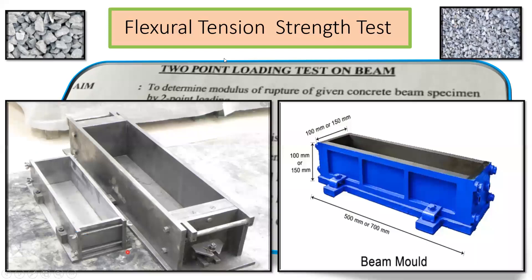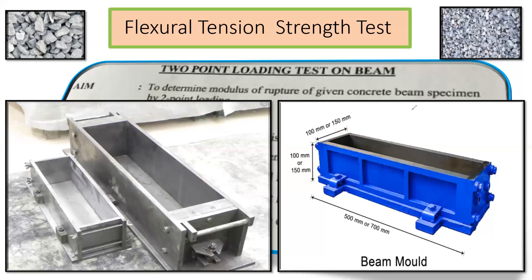You can see the two different molds here. The larger mold has a length of 700mm, a width of 150mm, and a depth of 150mm. The smaller mold has a length of 500mm, a width of 100mm, and a depth of 100mm. The code says that if you are using aggregates of 20mm size, then you should use the bigger size — 700mm × 150mm × 150mm.